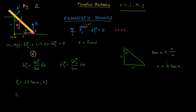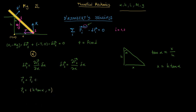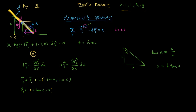Let's calculate R1. R1 equals R2 plus an extra vector segment. If this angle is alpha, then this angle is also alpha. This vector has norm L, the distance between points 1 and 2. The horizontal component involves sin(alpha), so it's minus L·sin(alpha), and the vertical component is L·cos(alpha). Adding them, we obtain: R1 = (h·tan(alpha) - L·sin(alpha), L·cos(alpha)).